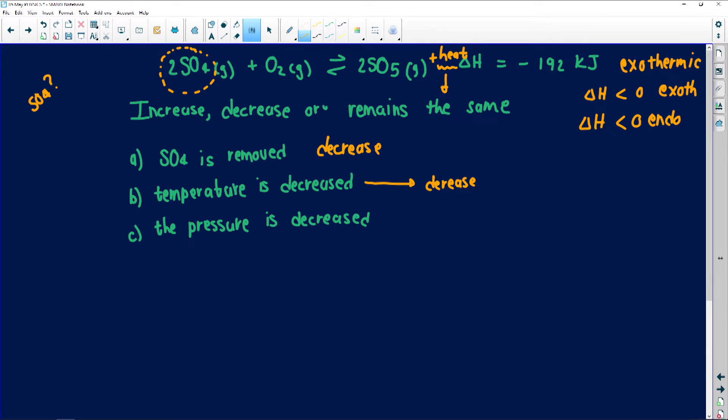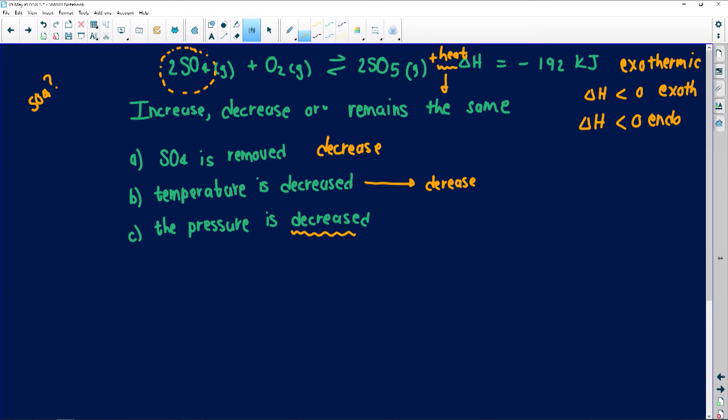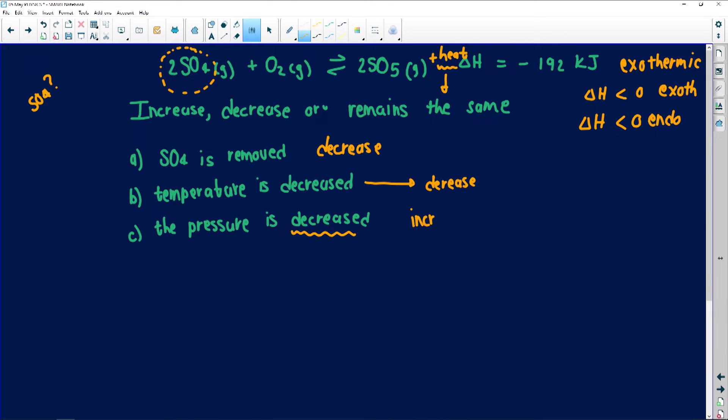What will happen if the pressure is decreased? When we decrease the pressure — think of a balloon — you're reducing the space between molecules, so you increase your volume. If you decrease your pressure, meaning the volume gets much smaller, we're going to get more effective collisions. Going back to kinetic molecular theory, more effective collisions will then produce more product. It will then increase.